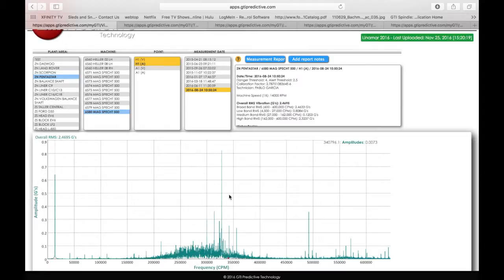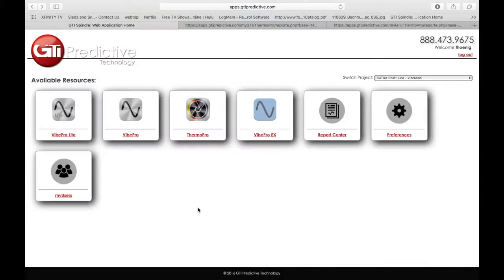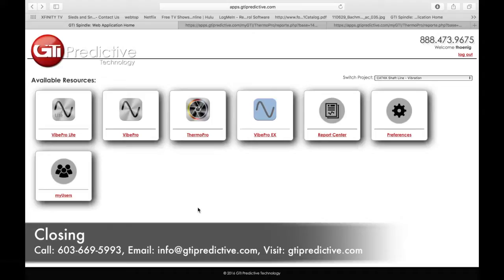We thank you very much for your attention. If there's any more questions at all, please reach out to us on the web at www.gtipredictive.com or reach out to us at our number at 603-669-5993. Thank you very much for your attention.